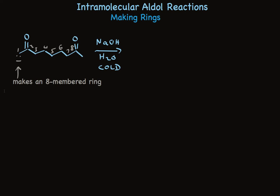But take a look at the other side. When we count the carbons that would be in the ring, addition of this enolate carbon to this carbonyl would make a six-membered ring. Perfect.